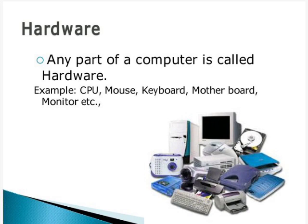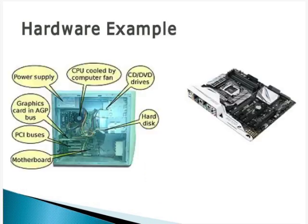It is not that outside parts are hardware and inside parts are software — that is not correct. Any part of a computer is called hardware. Apart from the basic parts — monitor, keyboard, mouse, CPU — what is inside your CPU is also hardware: power supply unit, motherboard, buses, hard disk, DVD and CD drives, pen drives, etc. Everything comes under hardware.